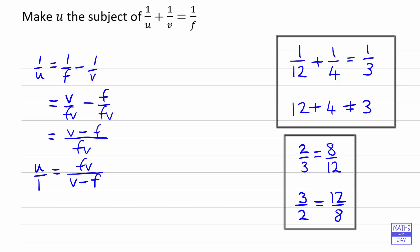And really, U over one is just U. So U is equal to FV over V minus F. So we've done it, we've made U the subject.